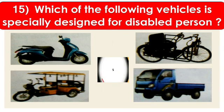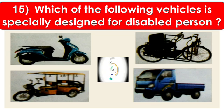Question number 15: which of the following vehicles is specially designed for a disabled person? Time is over — the right answer is B.